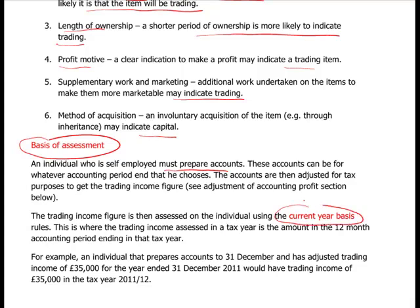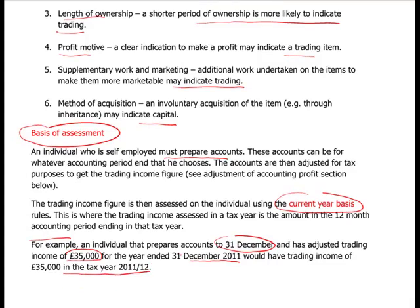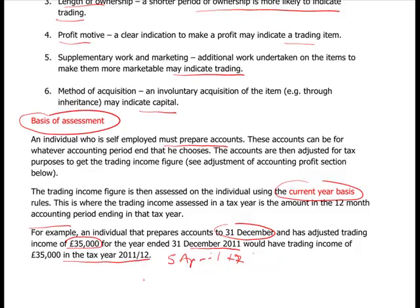Trading income is assessed on the individual using the current year basis - that is, the income arising in the 12-month period. For example, if you prepare accounts to 31st December and have tax-adjusted profits of £35,000 for the December 2011 accounts, that trading income falls into tax year 2011/12 because 5th April 2012 is after 31st December 2011. So £35,000 would go into the tax computation.